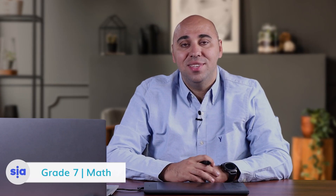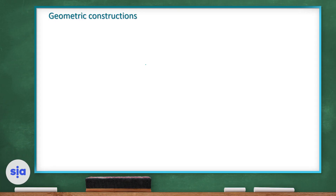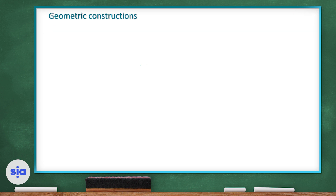Hello students, welcome to a new session. In this session we will continue with part two of the geometric construction. The fourth construction is bisecting a given angle.